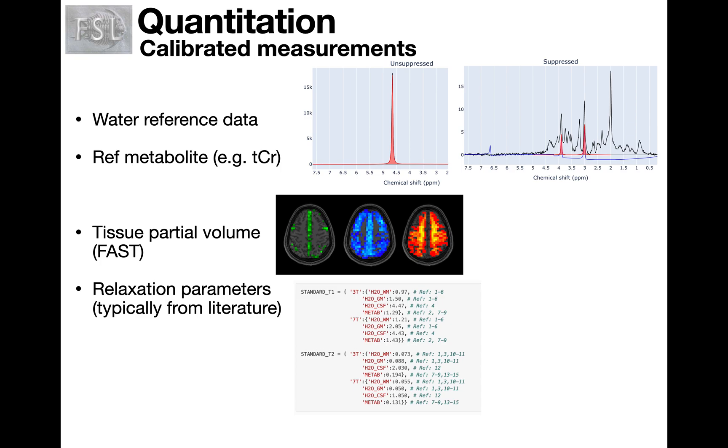We also need to account for relaxation properties of water relative to the metabolites, but also the fact that these relaxation parameters change depending on whether your signal comes from grey matter, white matter, or CSF. And so in addition to the water reference, we need a map of tissue partial volume which can be obtained using FAST, and also information that's typically from the literature on the T1 and T2 relaxation parameters. And these are provided or saved inside the code.